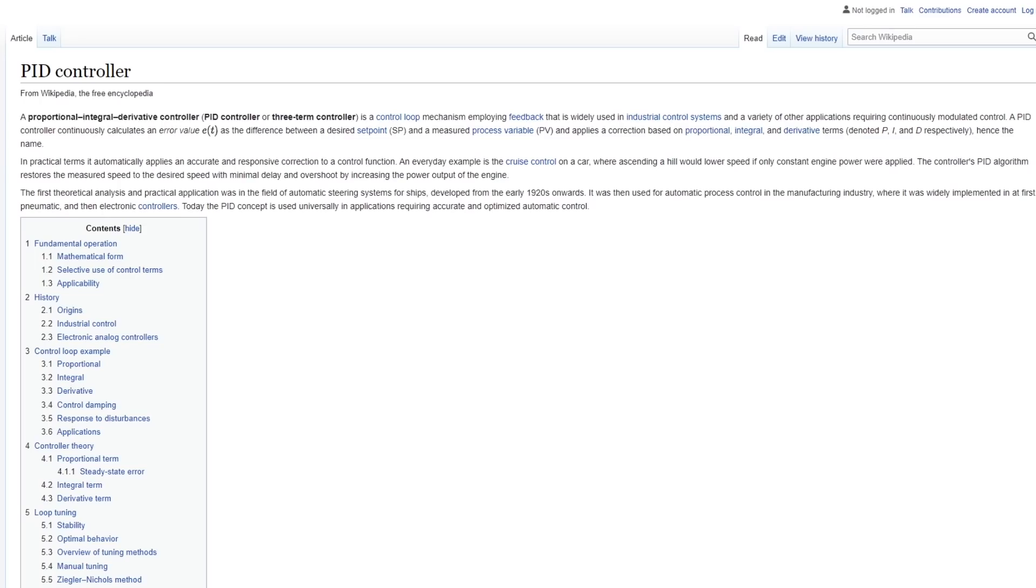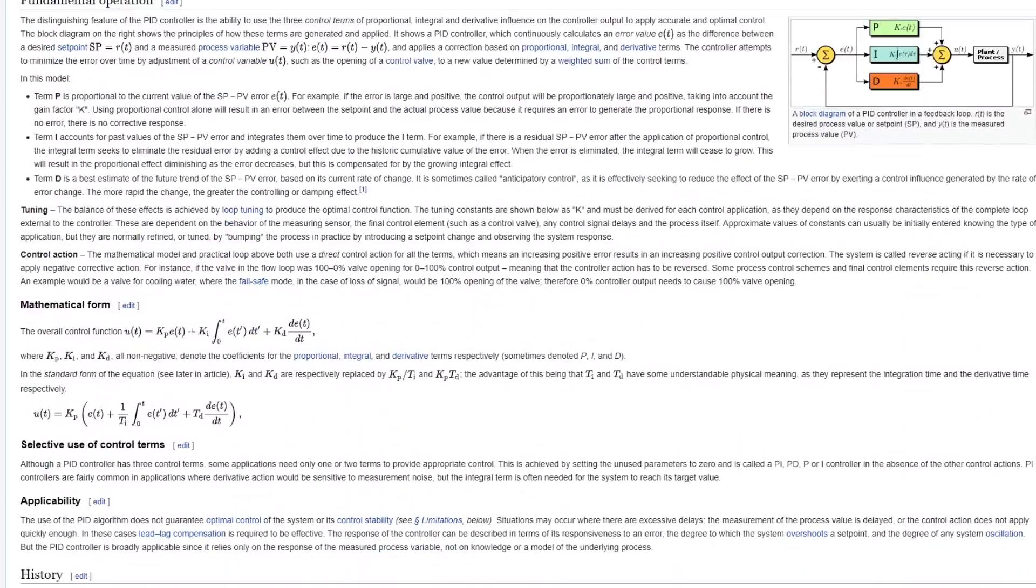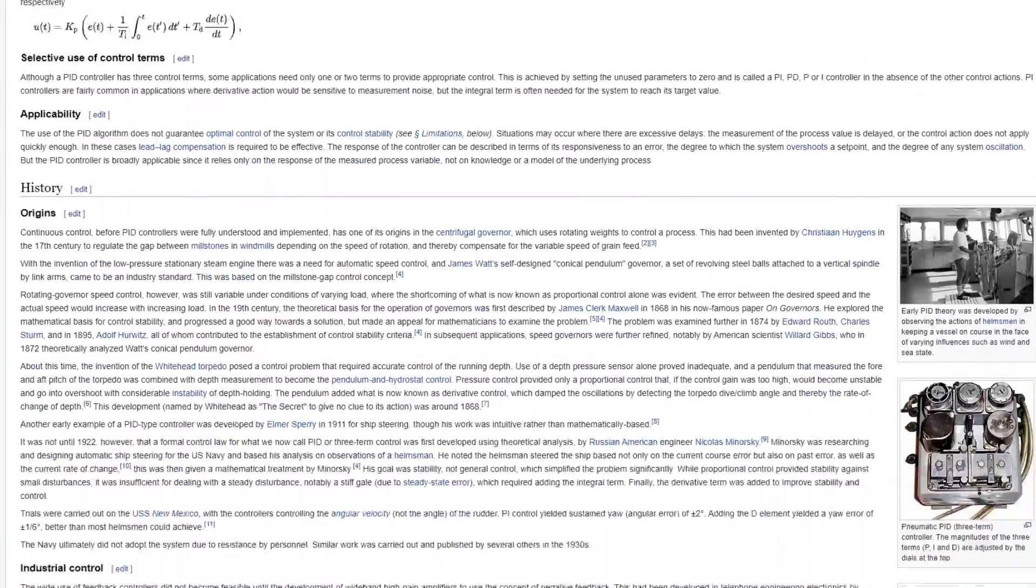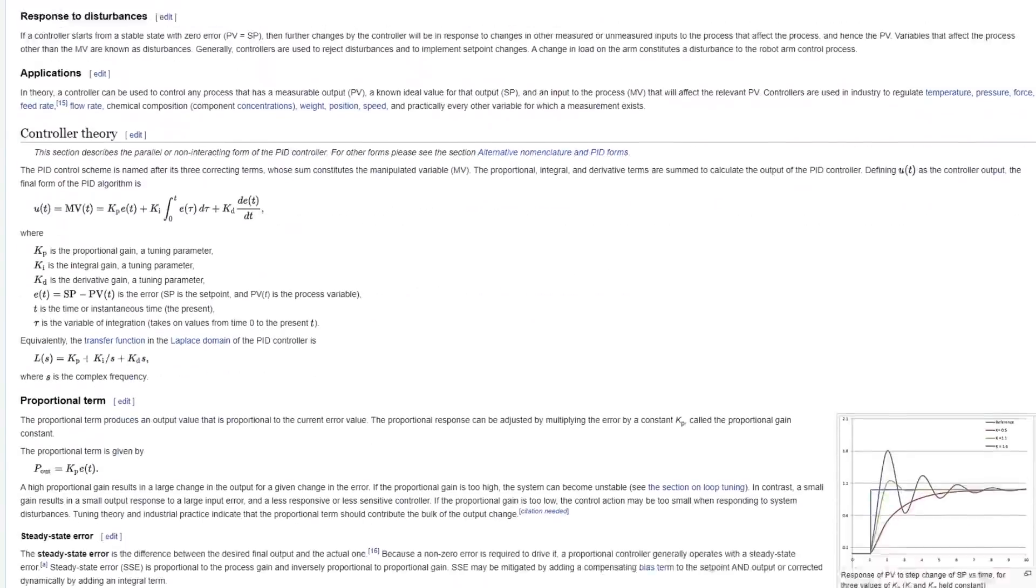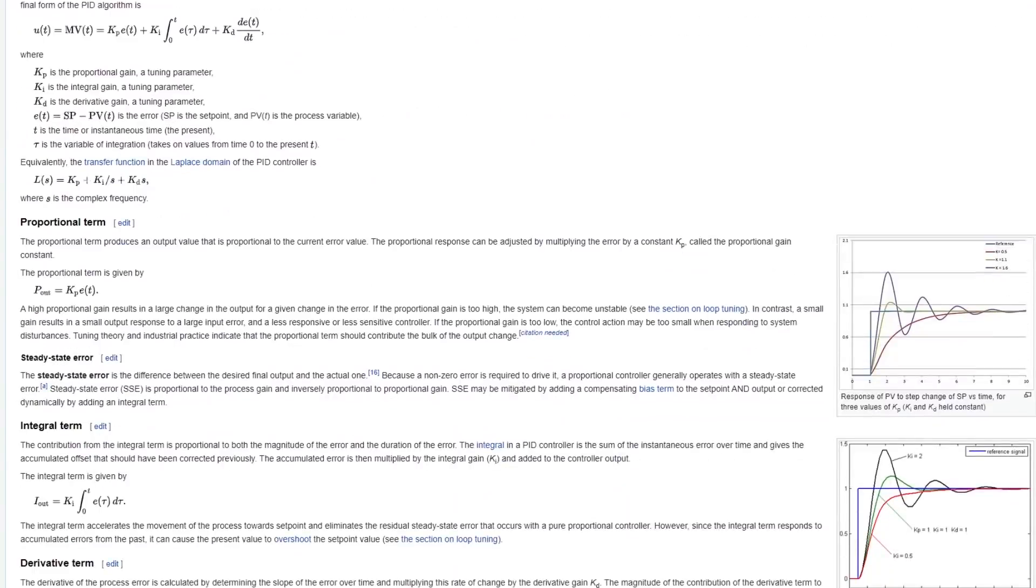So we're going to use a PID controller that I'd use in most balancing robots, and you can read all about this on Wikipedia. Ultimately, this will allow me to control how fast we accelerate towards the desired target, and also damp the response.